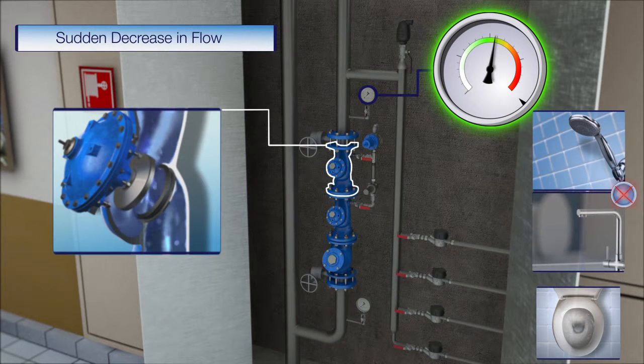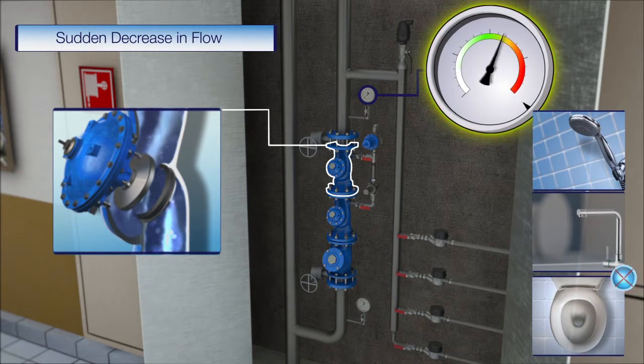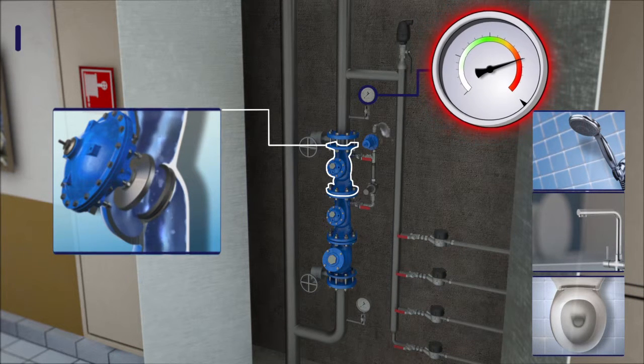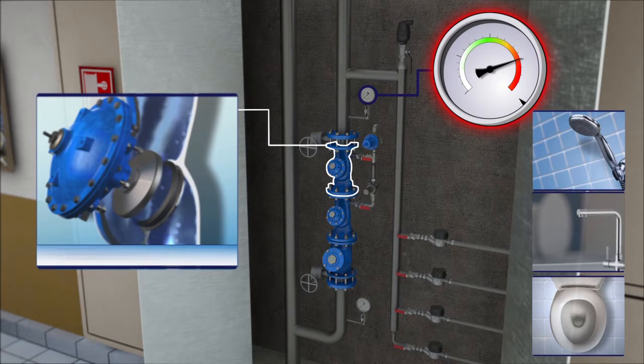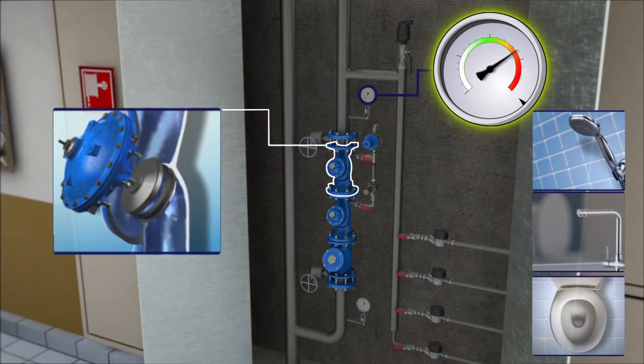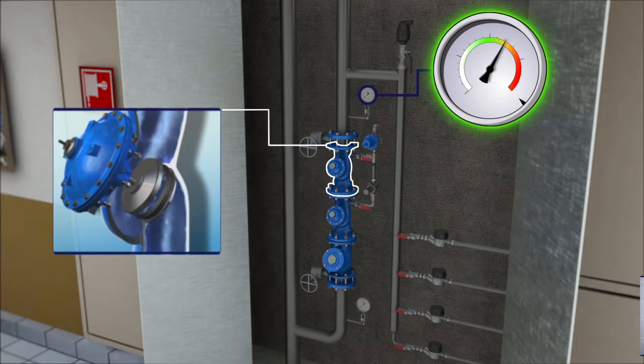When the demand for water suddenly drops, the downstream pressure rapidly rises beyond its safe setting. The emergency pressure relief valve opens its vent port for a short period, causing immediate reduction of the downstream pressure.